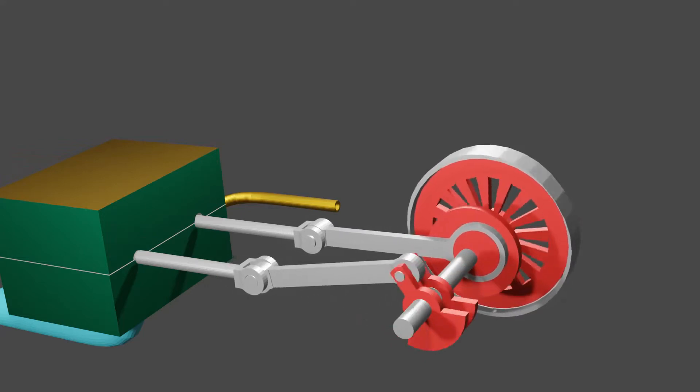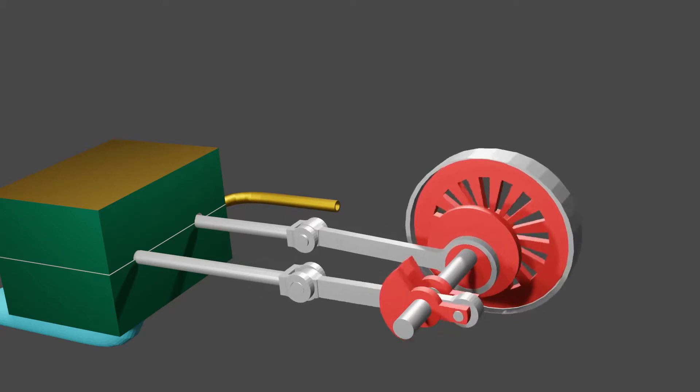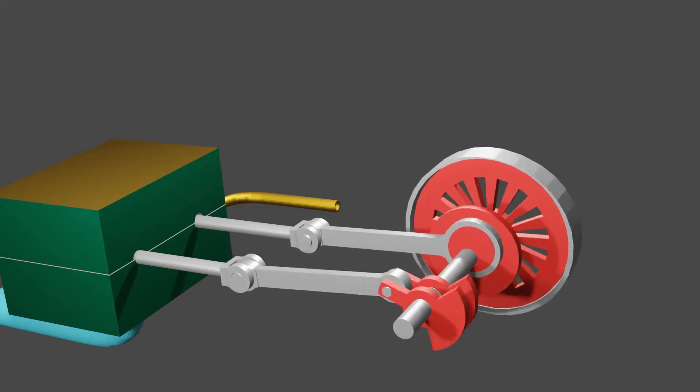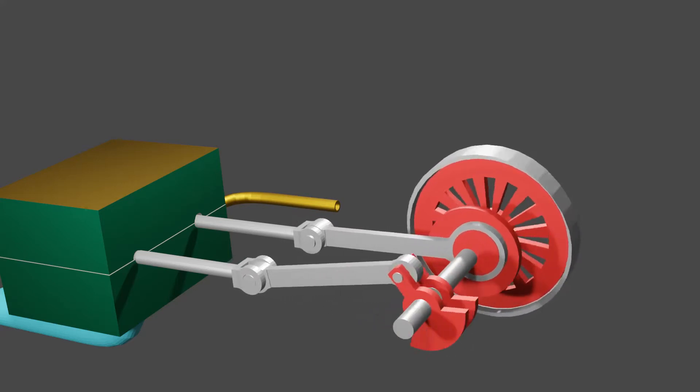The eccentric con rod has a large eye that follows the path of the eccentric. The eccentric is set around 90 degrees from the crank to provide the right movement, but it can be adjusted.